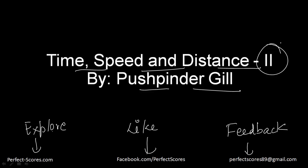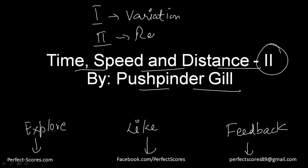Today we are going to do Time, Speed and Distance Part 2. We have already done Part 1, wherein I discussed the variations in Time, Speed and Distance according to one another. In the second part, we are going to discuss relative speed — that is the speed of objects with respect to each another. Don't get too confused by this big term 'relative speed' — it's a very simple concept.